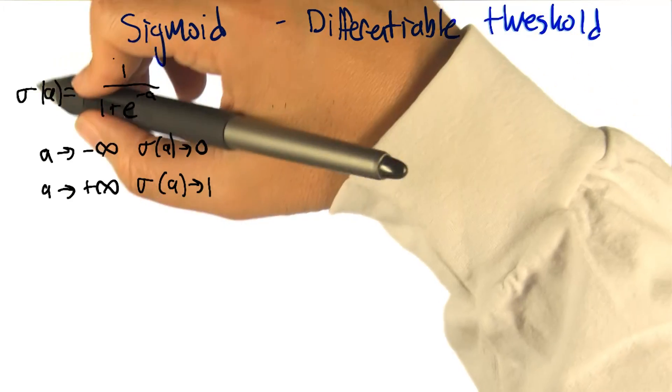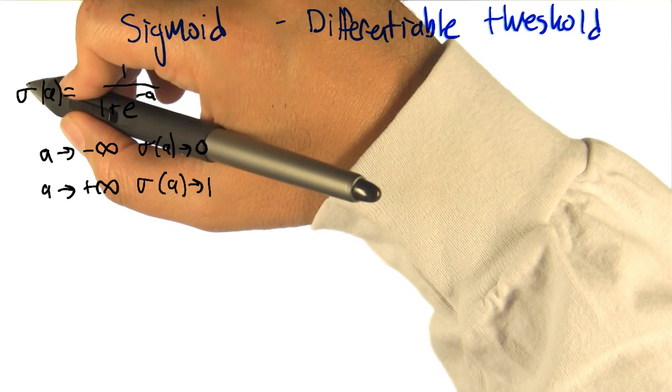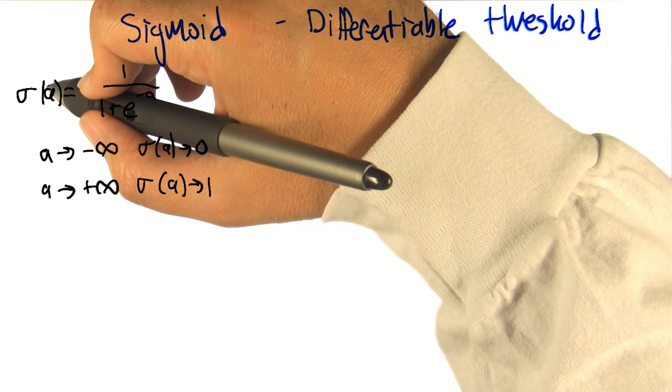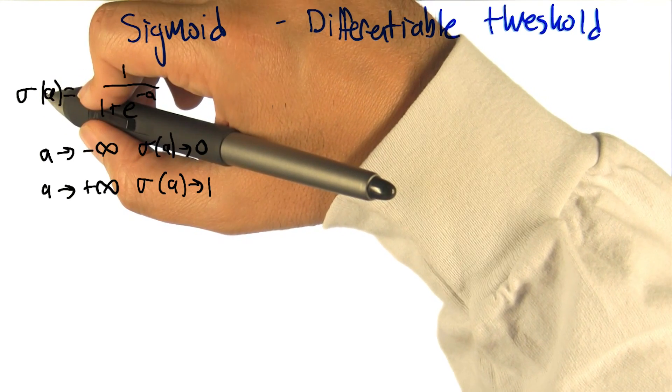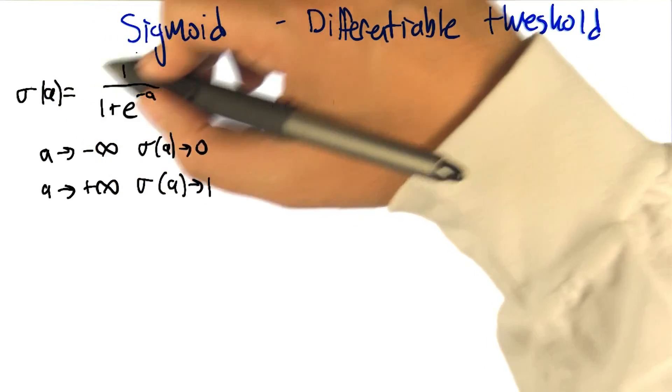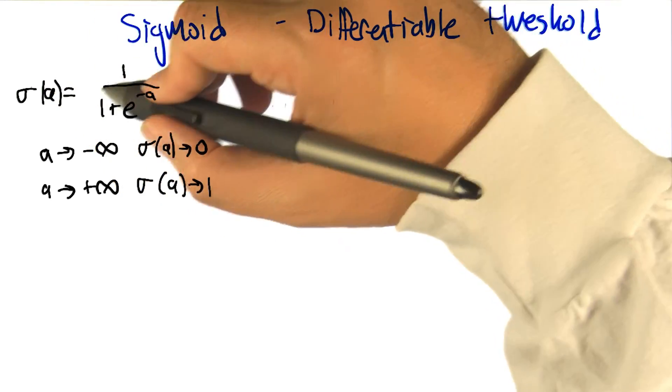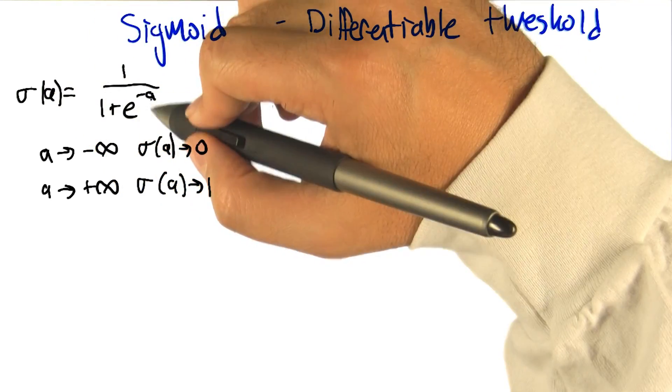So we're going to define the sigmoid using the letter sigma. And it's going to be applied to the activation, just like we were doing before. But instead of thresholding it at zero, what it's instead going to do is compute this function of a: one over one plus e to the minus a.